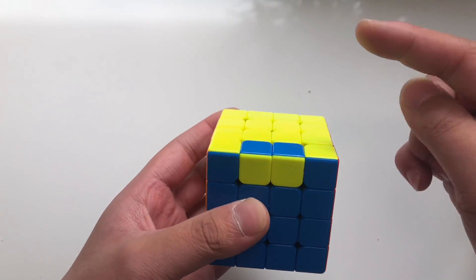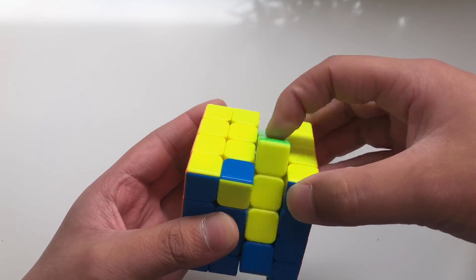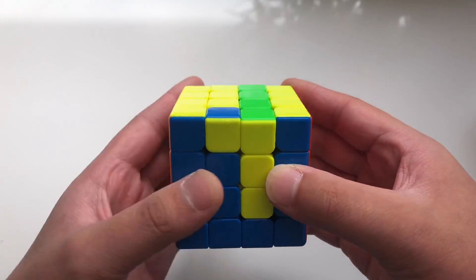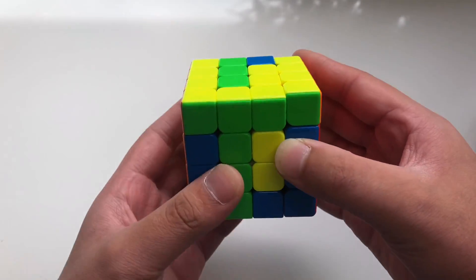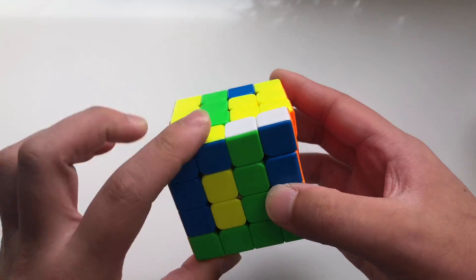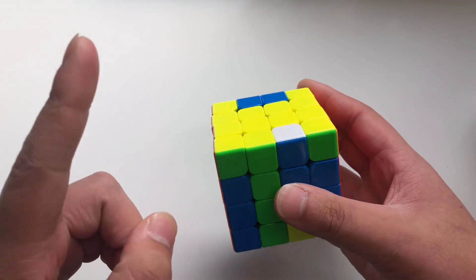So first you wanna pull this side down, just the middle right down, spin the top twice. Then you do the left layer down and spin the front twice, and do the left layer back up and spin the front twice. So that's the first step.